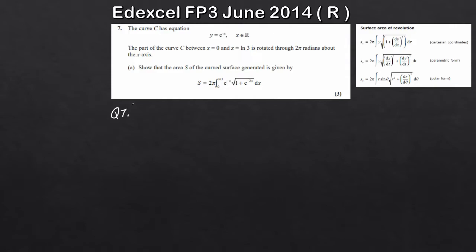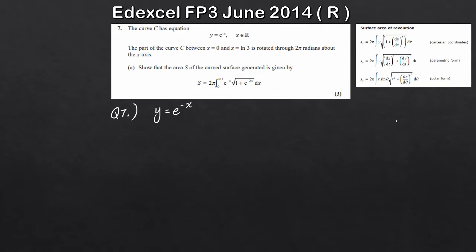So question 7: we've got the equation y = e^(−x). We've got the part of the curve C between x = 0 and x = ln 3, which is rotated 2π radians about the x-axis. We want to show that the area S of the surface generated is given by a specific formula. The formulas are given in the back of the formula book — pretty much the last page for A-level Further Maths — covering Cartesian, parametric, or polar form.